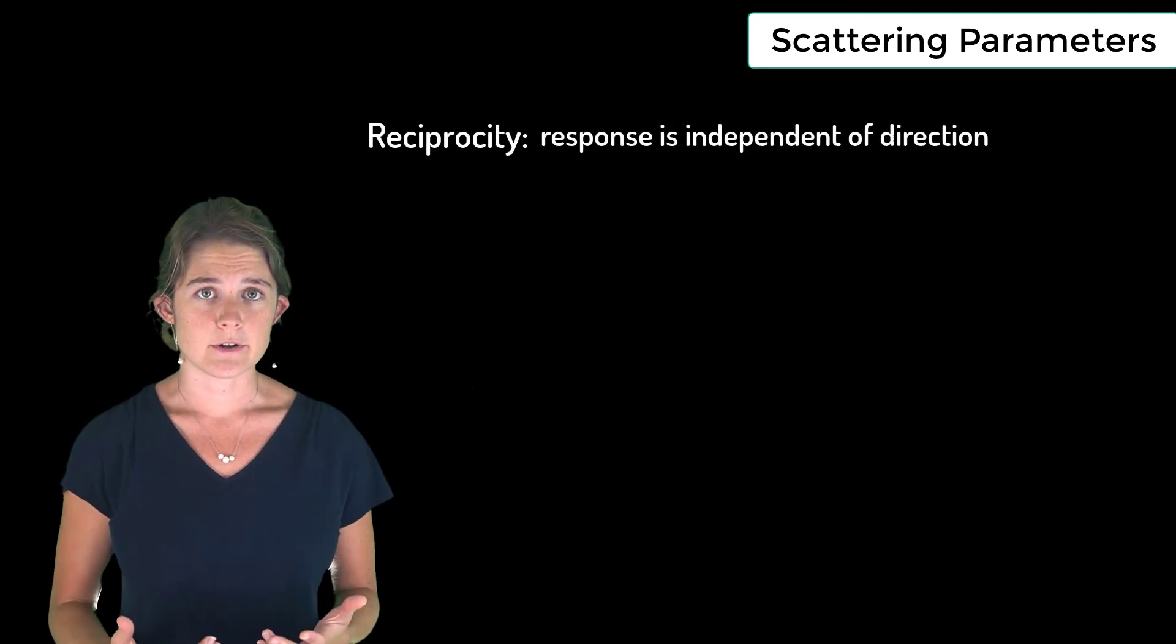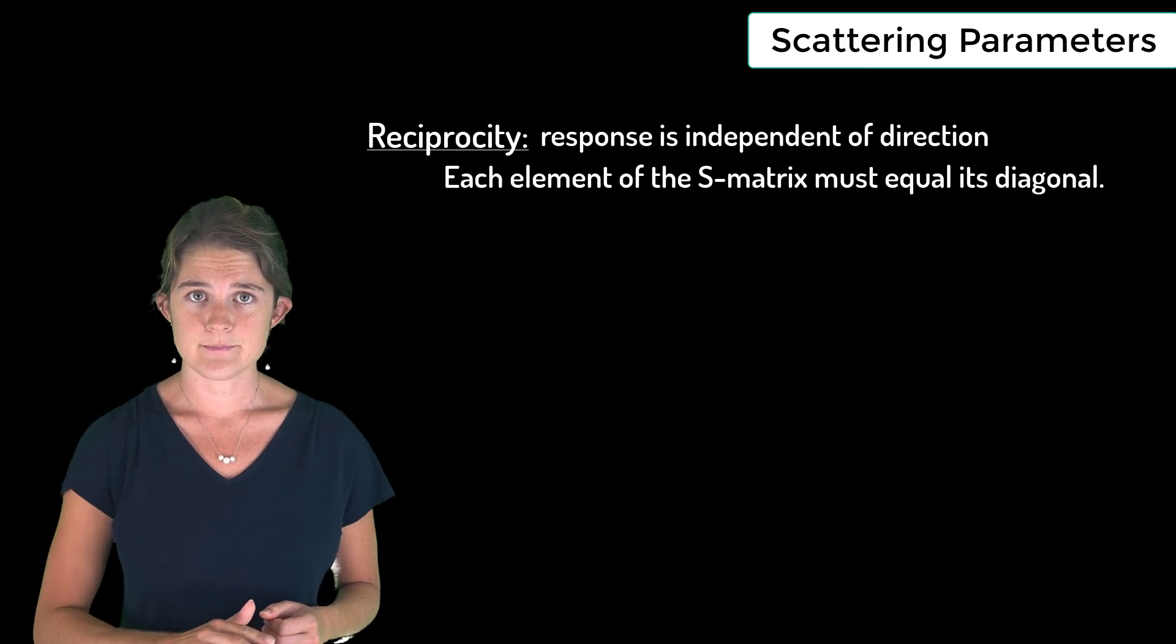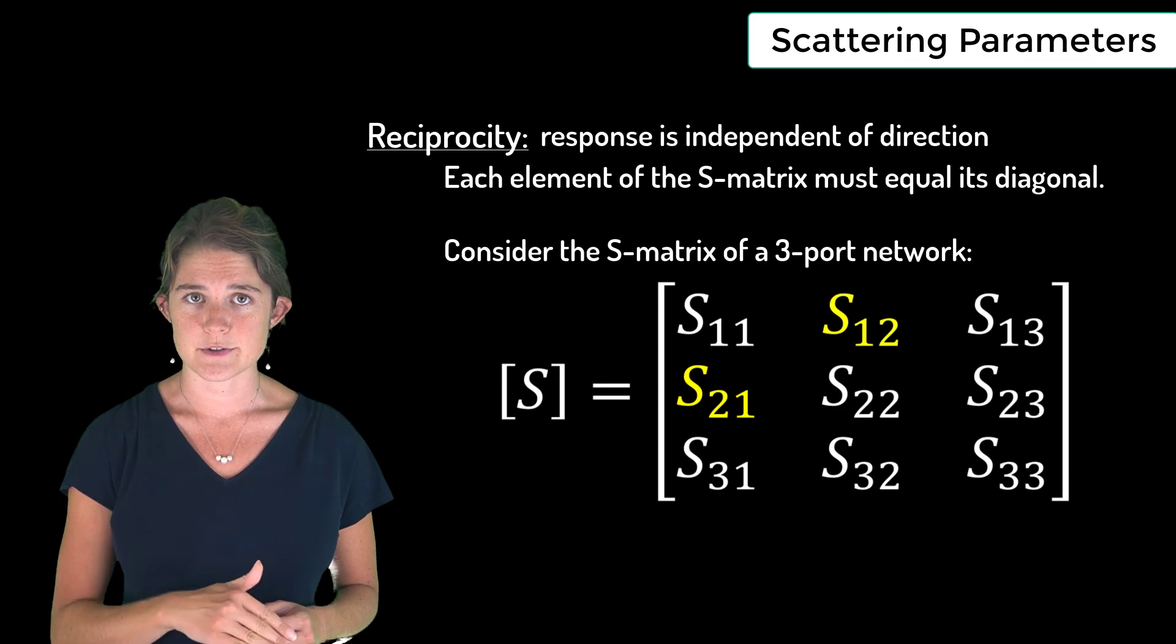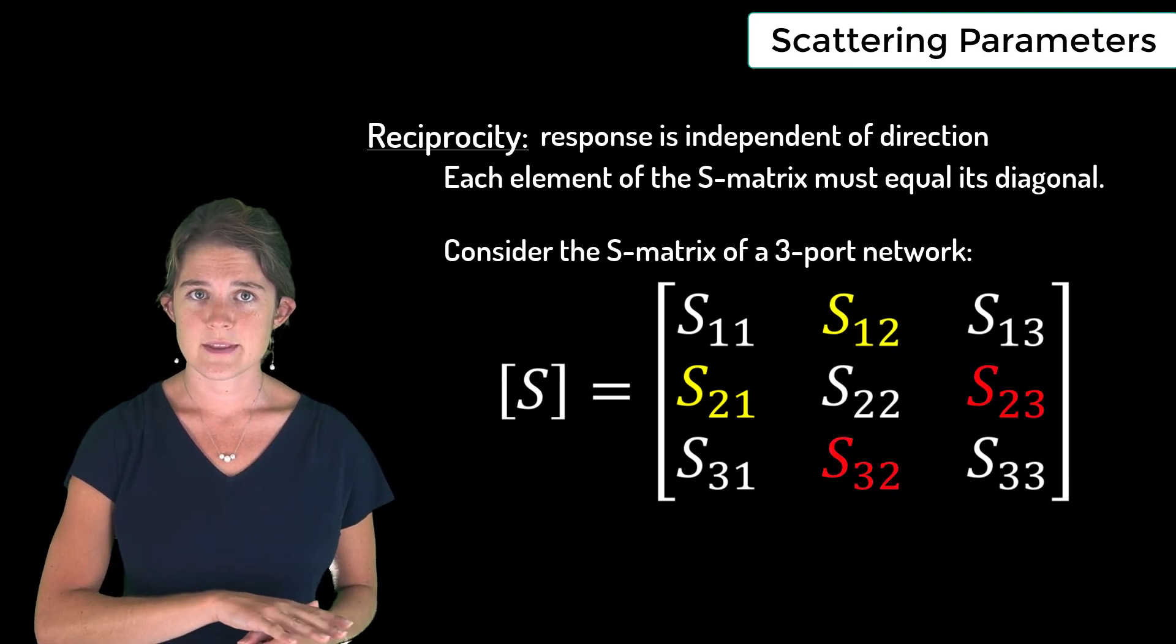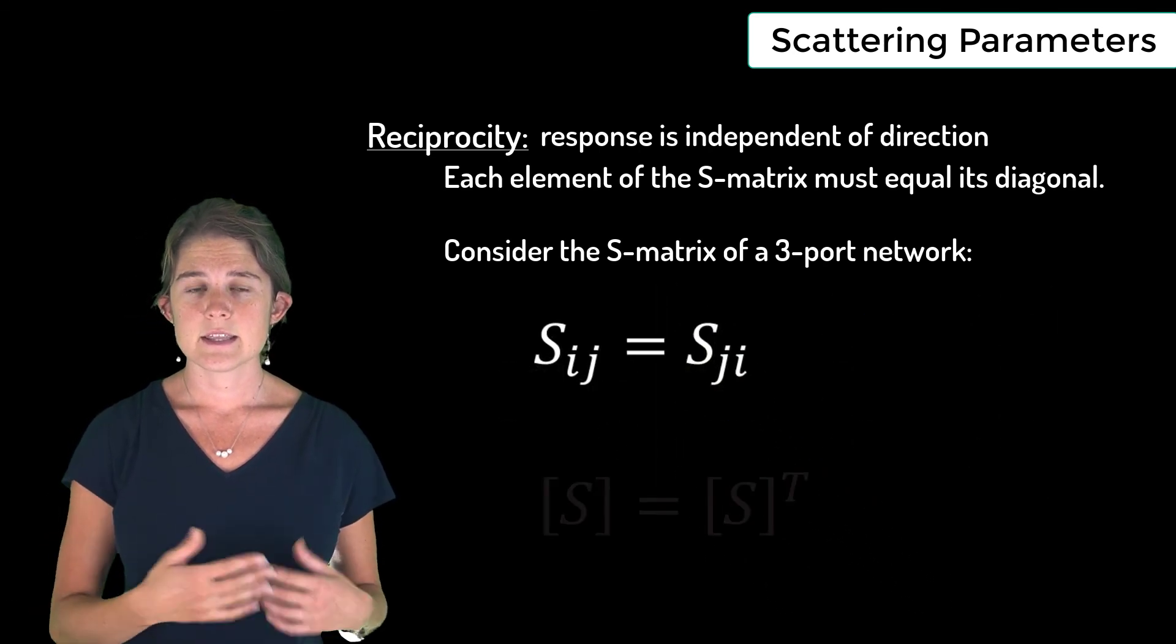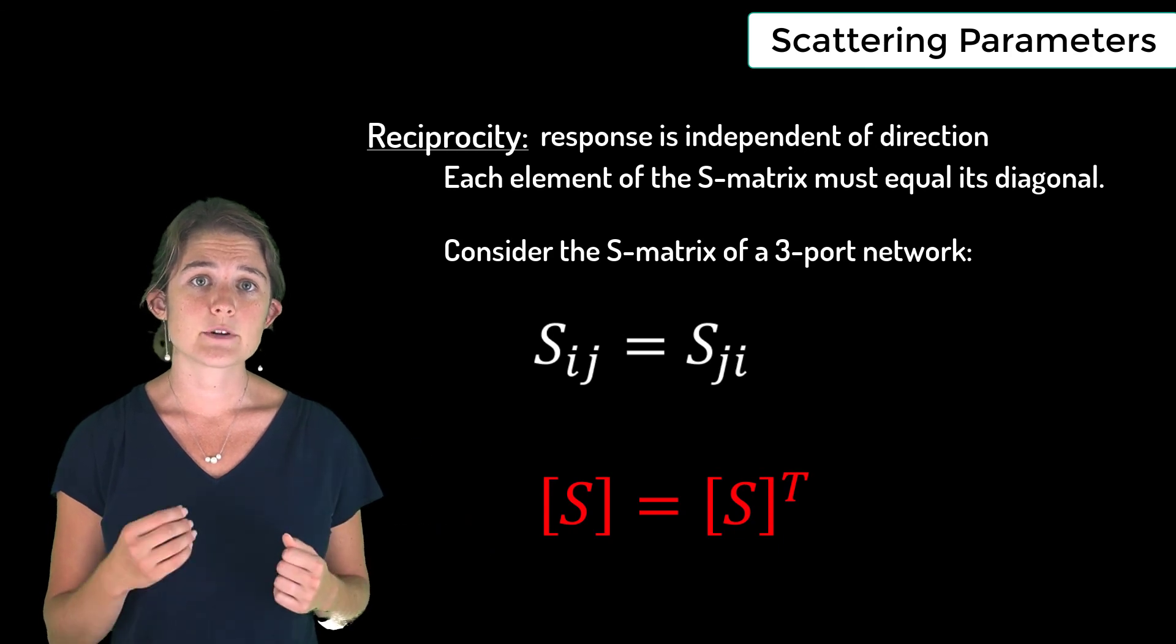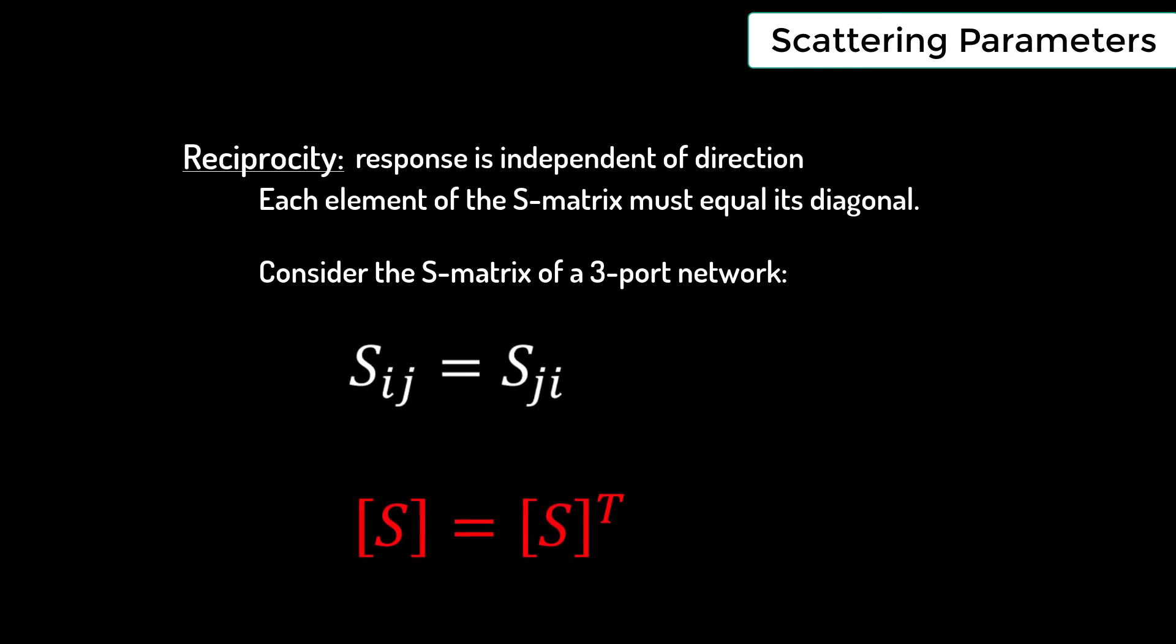If a network is reciprocal, each element in the S matrix must equal its diagonal. So for example, S21 must equal S12, S23 must equal S32, and Sij must equal Sji. This can be written like this: the S matrix of a reciprocal system is equal to its transpose.